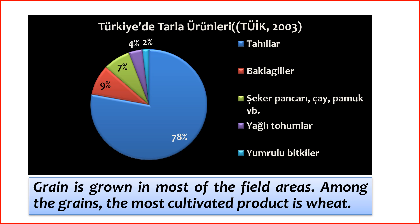Grain production witnessed growth in 2022 compared to the previous year. The production amounts of grain products surged by 21.3%, reaching around 38.7 million tons. Wheat production increased by 11.9% to 19.8 million tons, corn production rose by 25.9% to 8.5 million tons, barley production surged by 47.8% to 8.5 million tons. Additionally, rice production escalated by 36.5% to 273,000 tons, and oat production saw a 32.2% increase to 365,000 tons. In the legume group, chickpeas grew by 22.1% to 580,000 tons, dried beans decreased by 11.5% to 270,000 tons, and red lentils increased by 75.4% to 400,000 tons.